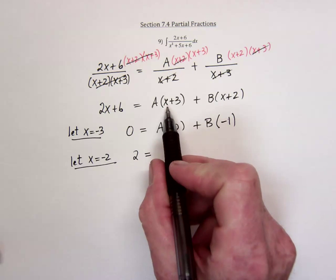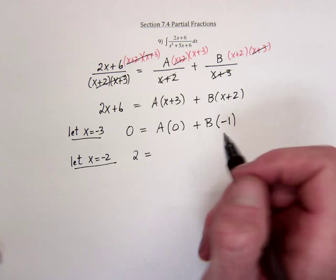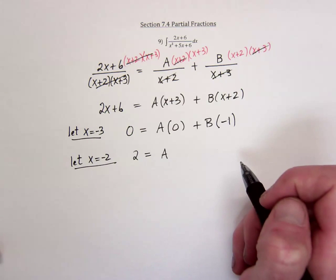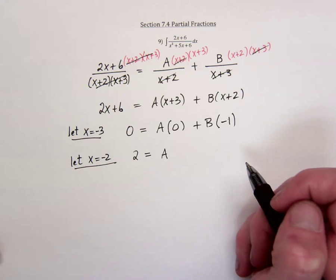Use negative 2 in here, negative 2 and positive 3 is 1, so A times 1. So it turns out that the A is 2.